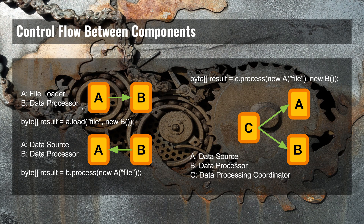One way to design this interaction would be to create an instance of A and then call A.load — calling the load method on A — passing a path to the file to load and then a new B, meaning a new data processor. A will then load the file and pass the bytes on to this B instance, and B will then return the result of the processing, which A will then return to whoever calls A.